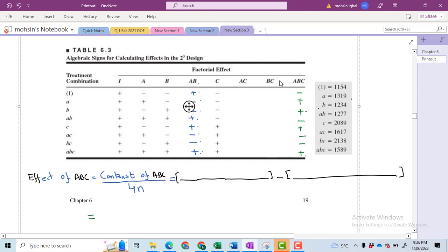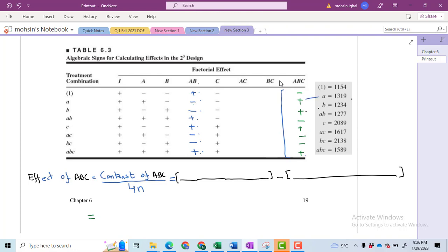Hi, I welcome all of you in the third part of my video in which I will compute the effect of ABC using the contrast of ABC. This whole column will help us assign these signs with the values. We'll see which values have positive signs: A, this B, then this ABC, and we have this plus sign on the fifth number. We have C on the fifth number.